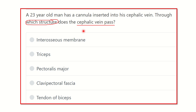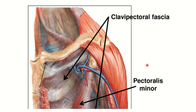Let's look at the cephalic vein. Here we can see the lower part of the neck and upper part of the chest — the sternum and clavicle. This vein is the cephalic vein, and we can see it enters the axillary vein by piercing a whitish structure, which is the clavipectoral fascia.